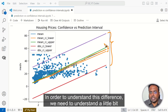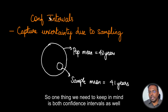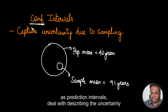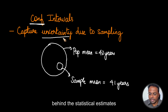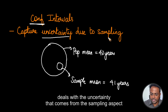In order to understand this difference, we need to understand a little bit of the concept behind these ideas. One thing we need to keep in mind is that both confidence intervals as well as prediction intervals deal with describing the uncertainty behind the statistical estimates. The uncertainty described by confidence intervals specifically deals with the uncertainty that comes from the sampling aspect.